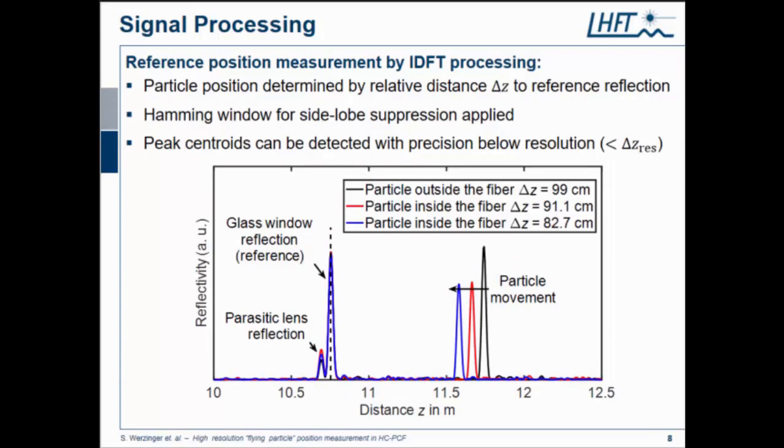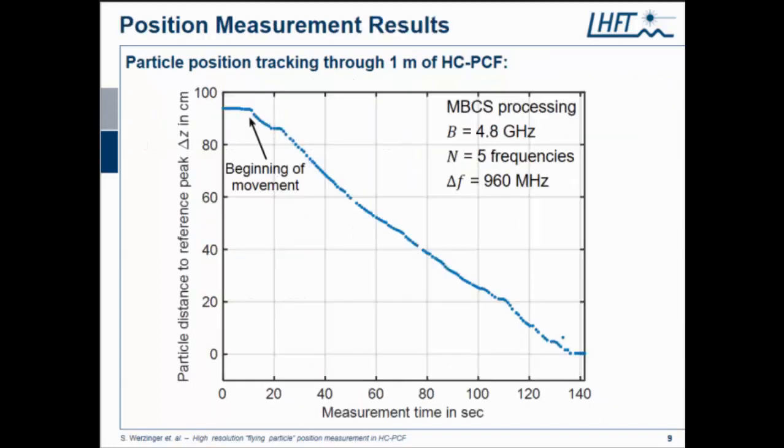This is how the response looks in time domain using a Fourier transform. We have our reference reflection here, we also have a third parasitic lens reflection, but we can include this in the model so it doesn't interfere. This is the particle reflection, it's almost quite equal to the Fresnel reflection at the glass window. Here you can see the particle moving inside the fiber, and we can clearly track the centroid of this peak to high precision.